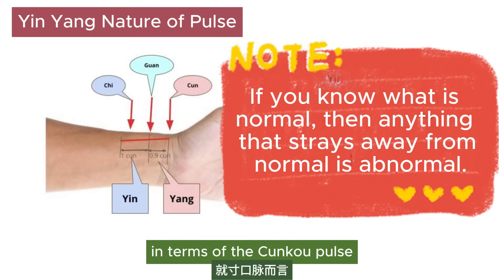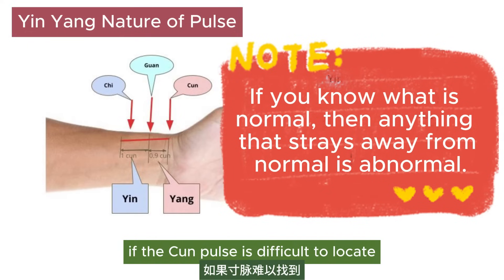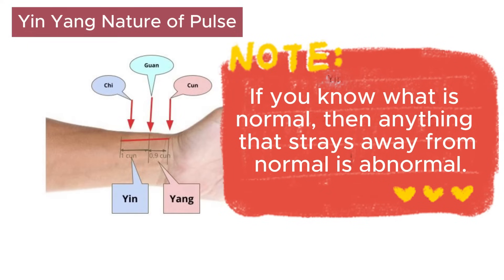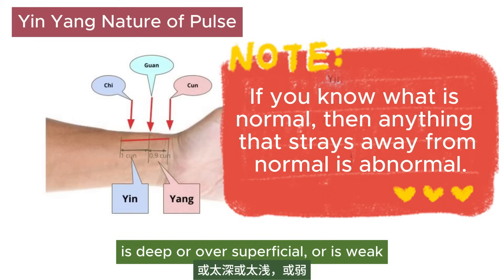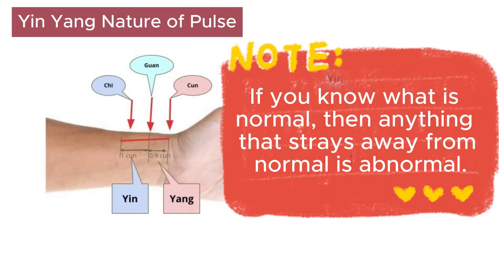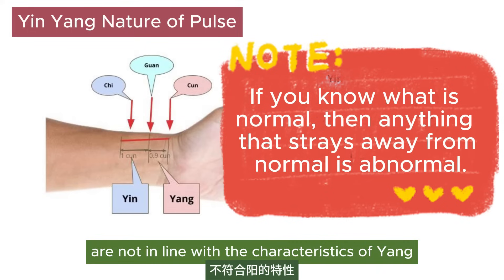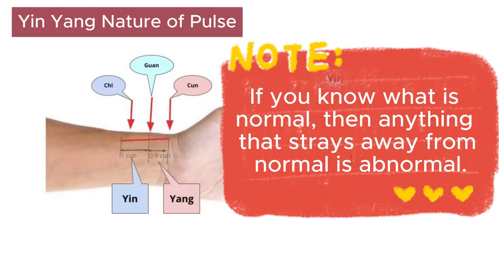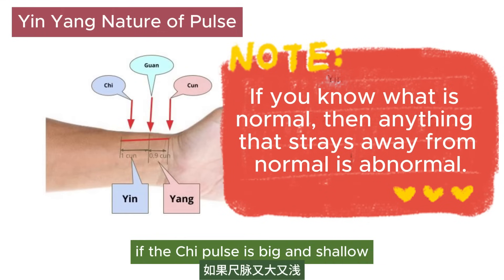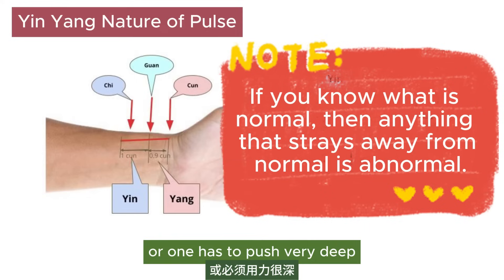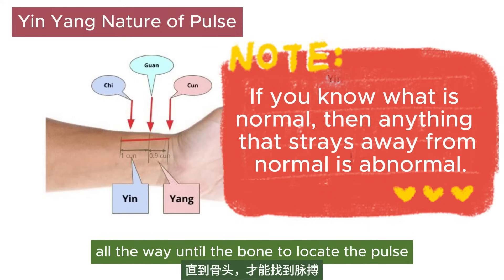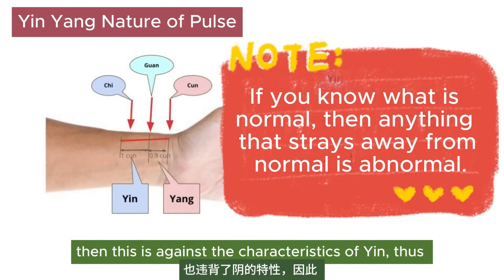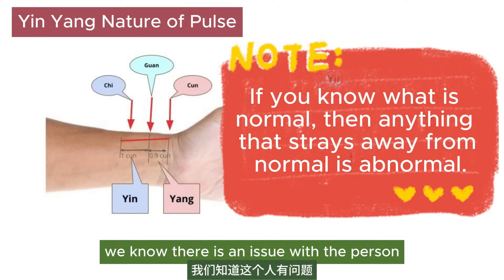In terms of the cun pulse, for example, if the cun pulse is difficult to locate, is deep, over-superficial, or weak, those manifestations are not in line with the characteristics of yang, and therefore we know there is an issue. With the same logic, if the chi pulse is big and shallow, or one has to push very deep all the way until the bone to locate the pulse, then this is against the characteristics of yin, and thus we know there is an issue with the person.